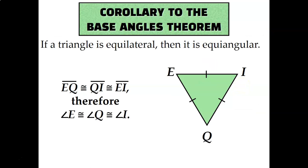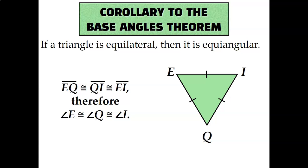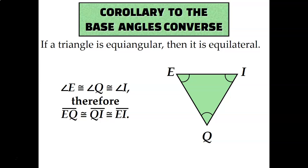We also have the corollary to the base angles theorem and the corollary to the base angles converse. A corollary is basically an extension of a theorem — a more specific version of what you already know. In this case, if a triangle has three congruent sides (it's equilateral), then it must have three congruent angles (it's equiangular). The corollary to the base angles converse says the opposite: if all three angles are congruent (equiangular), then all three sides must be congruent (equilateral).